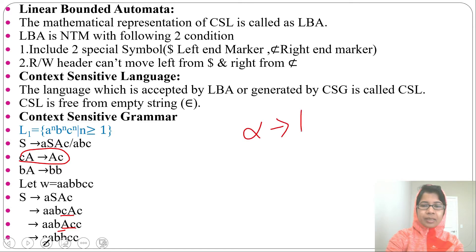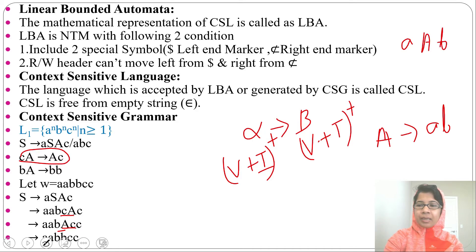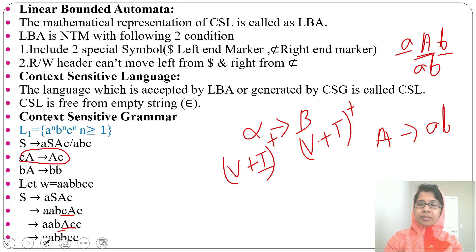Context-sensitive grammar has the format: alpha → beta, where alpha can be any string of variables and terminals (positive closure), and beta can also be any string of variables and terminals. This means terminals can appear on both sides. But in context-free grammar, only a variable appears on the left side. For example, A → AB — you don't need to check left and right context. That's why context-free grammar is not dependent on the surrounding context; you can directly apply its production.